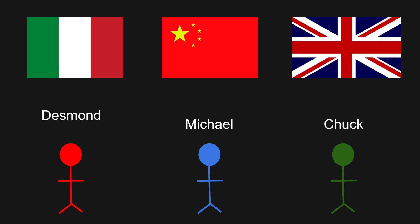Imagine we have a group of friends — Desmond, Michael, and Chuck — who are deciding on where to go for dinner tonight. They have three options: they can go to an Italian restaurant, a Chinese restaurant, or a British restaurant. Desmond's favorite is Italian food, Michael's favorite is British food, and Chuck's favorite is Chinese food. Inevitably, when they try voting on which restaurant to go to, they end up in a tie.